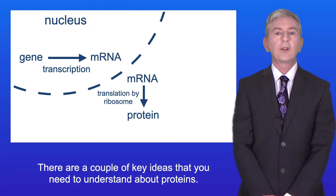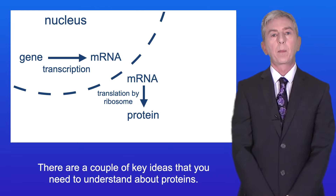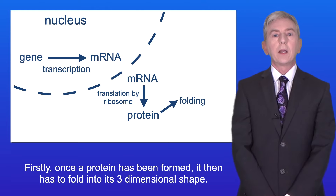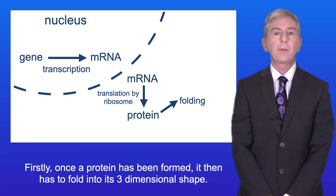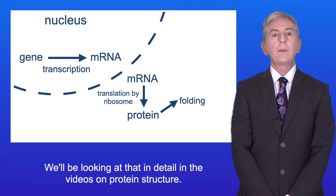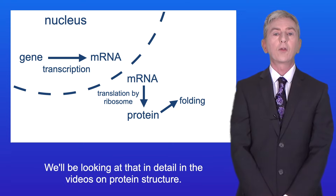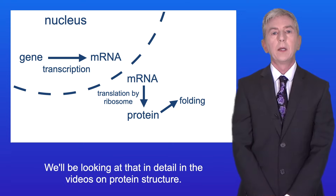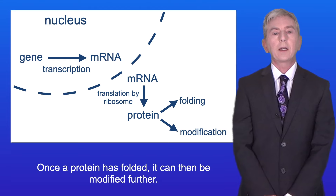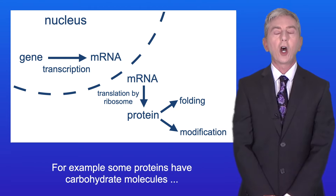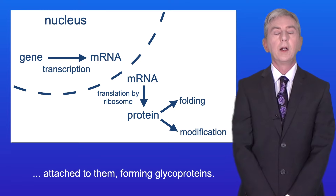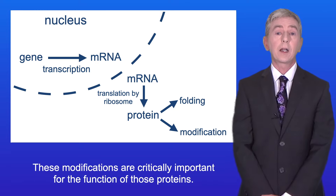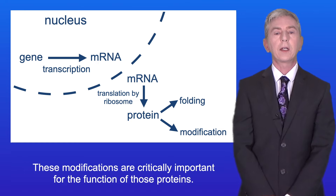Now there are a couple of key ideas you need to understand about proteins. Firstly, once a protein has been formed it then has to fold into its three-dimensional shape. We'll be looking at that in detail in the videos on protein structure. Once a protein has folded it can then be modified further. For example, some proteins have carbohydrate molecules attached to them forming glycoproteins, and these modifications are critically important for the function of those proteins.